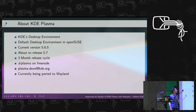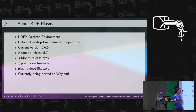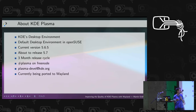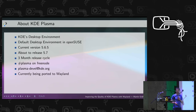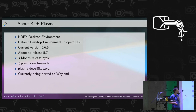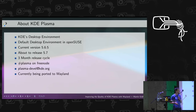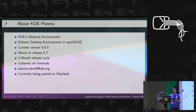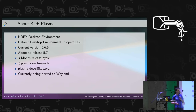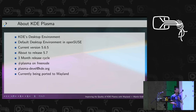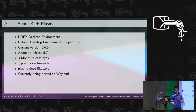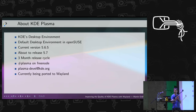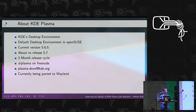A little bit about Plasma. Plasma is KDE's desktop environment — KDE is not a desktop environment, KDE is a community, and Plasma is the desktop environment of that community for users. We are currently at version 5.6.5 and about to release 5.7, which I've heard will be the default desktop environment in the next openSUSE Leap release. We are currently at a three-month release schedule, down from six months. You can find us on #plasma on IRC or on our mailing list. It's currently an X11 windowing system but in the process of being ported to Wayland, and it's actually working quite well already.